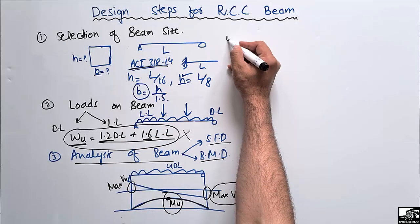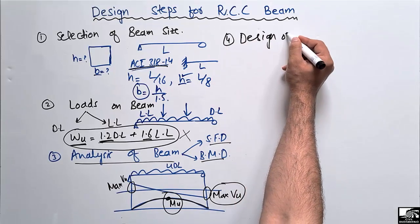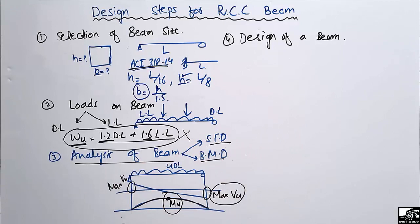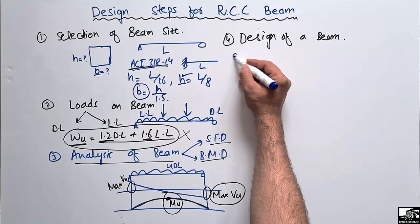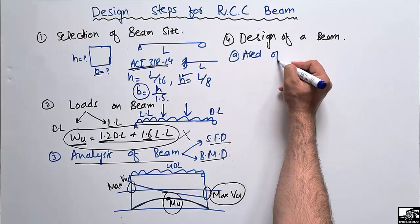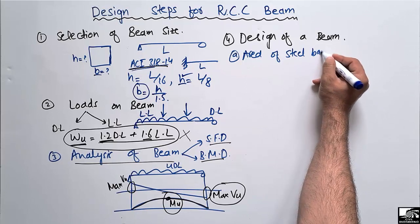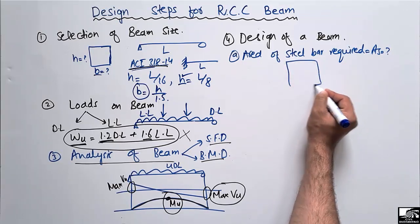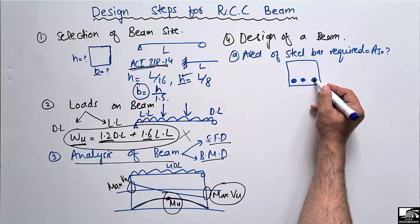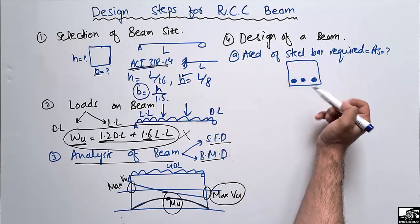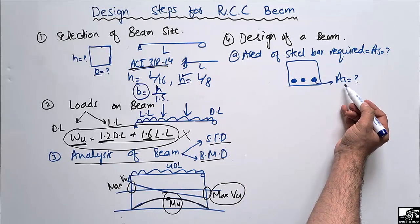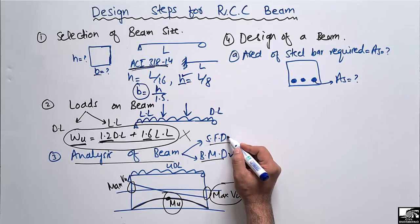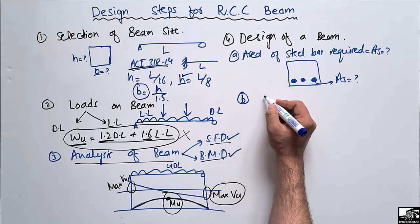After analysis, the fourth step — and the most important step — is the design of the beam. This step is composed of two parts. Part A involves finding the area of steel bar required (As) for the beam in order to resist the maximum bending moment obtained from the bending moment diagram. This required steel area is unknown and must be determined.